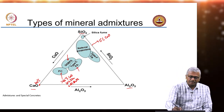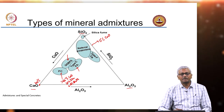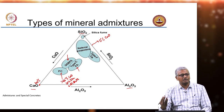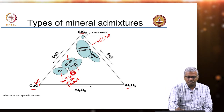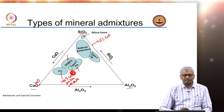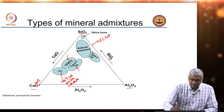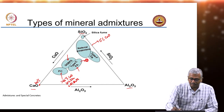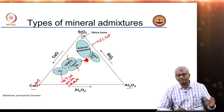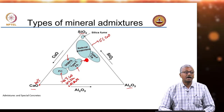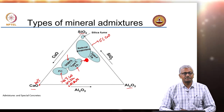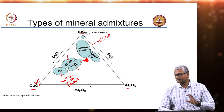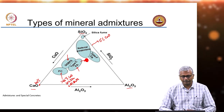Type C fly ash — calcium silica — silica is generally more than calcium, but it is probably somewhere in this region because the amount of calcium is less. The position shown is not exactly accurate because the amount of calcium is less even in high-calcium fly ash or Type C fly ash, where calcium content is generally around 10 to 20% or sometimes more, but not always.